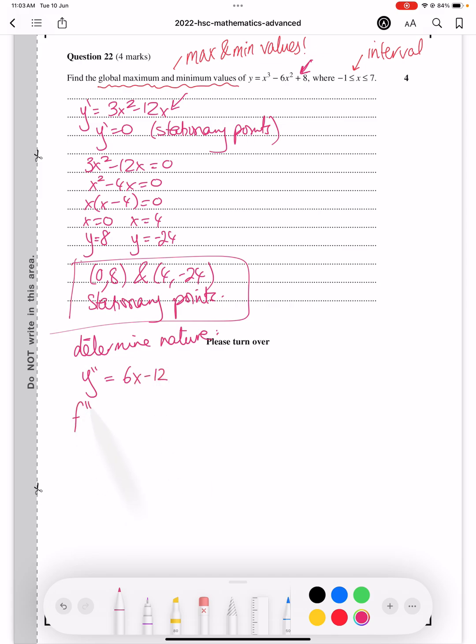So we want to test the nature of (0, 8) by plugging in x equals to 0 into this equation. So that gives us minus 12. Since f double dash is less than 0, therefore (0, 8) is a maximum turning point.